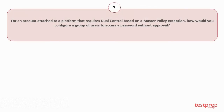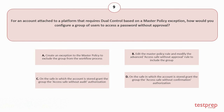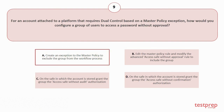Question number 9: For an account attached to a platform that requires dual control based on a master policy exception, how would you configure a group of users to access a password without approval? Your options are: A. Create an exception to the master policy to exclude the group from the workflow process. B. Edit the master policy rule and modify the advanced access safe without approval rule to include the group. C. On the safe in which the account is stored, grant the group the access safe without audit authorization. D. On the safe in which the account is stored, grant the group the access safe without confirmation authorization. The correct answer is option A.